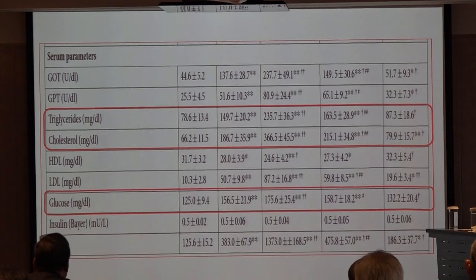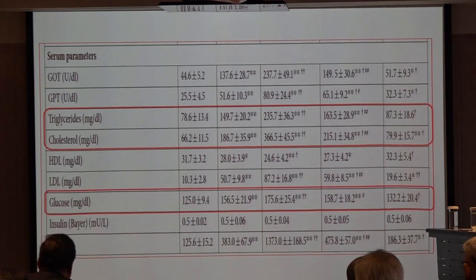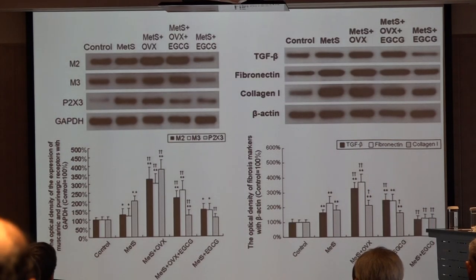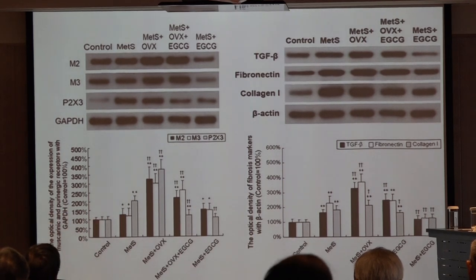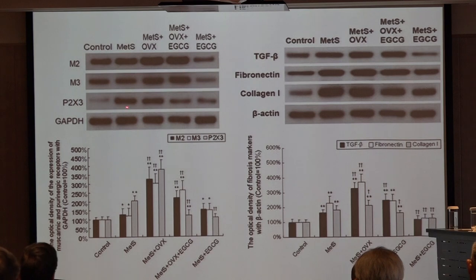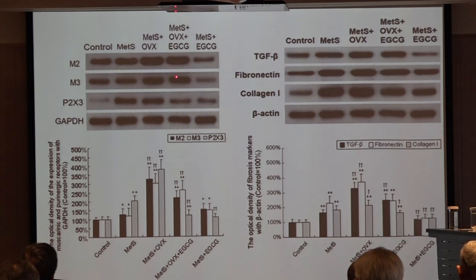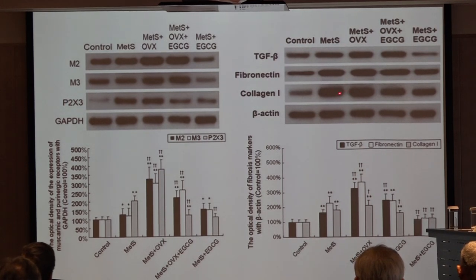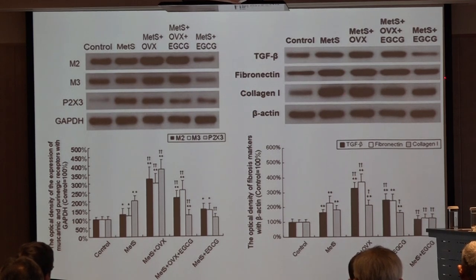Western blot results showed M2 and M3 muscarinic receptors and P2X3 purinergic receptors increased in the metabolic syndrome with ovariectomy group, but EGCG decreased these muscarinic and purinergic receptors. For profibrosis markers and detrusor fibrosis markers, metabolic syndrome with ovariectomy significantly increased collagen-1 expression. EGCG treatment decreased detrusor fibrosis and the pro-inflammatory factor TGF-beta.